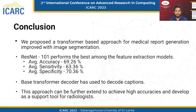In conclusion, we proposed a transformer-based approach for medical report generation, improved with image segmentation, which resulted in more accurate and precise reports that can be used as supportive tools for radiologists. Our comparative analysis of different CNN architectures for visual feature extraction showed that ResNet-101 performed the best, with an average accuracy of 69.26%, average sensitivity of 63.36%, and average specificity of 70.36%. We also used a base transformer decoder to decode the captions, enabling us to generate reports with more relevant and precise information. Overall, this approach can be further extended to achieve even higher accuracies and developed as a supportive tool for radiologists, helping to reduce the burden on medical professionals and improve patient care.